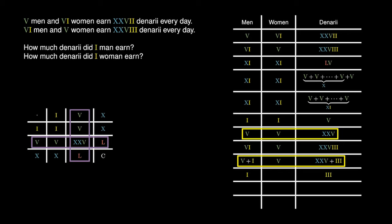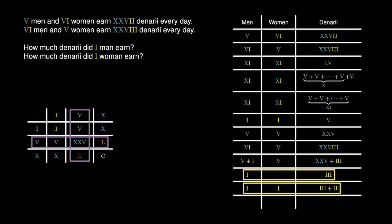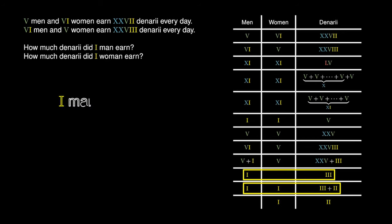On the other hand, we recall that 1 man and 1 woman together earn 5 denarii, which we can break up into 3 plus 2. Since 1 man earns 3 denarii and 1 man and 1 woman earn 3 plus 2 denarii, we can deduce that 1 woman earns 2 denarii. Therefore, 1 man earns 3 denarii and 1 woman earns 2 denarii.